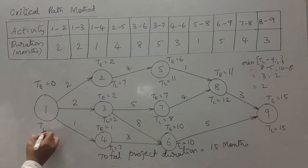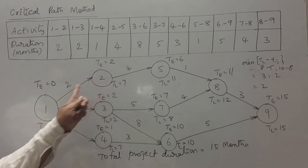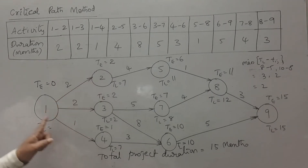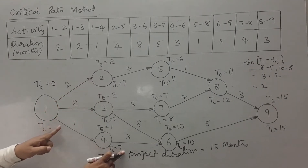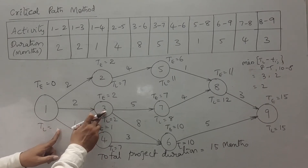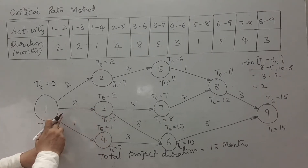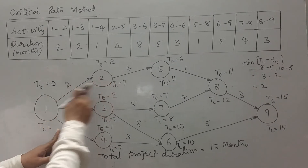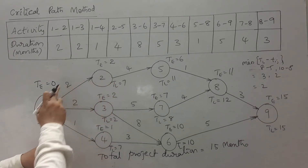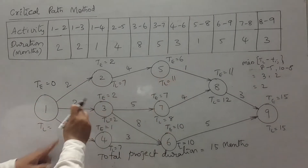For node 1, there are three paths back: from node 4 it is 7 minus 1 = 6; from node 3 it is 2 minus 2 = 0; from node 2 it is 7 minus 2 = 5. We take the minimum among these three, which is 0.